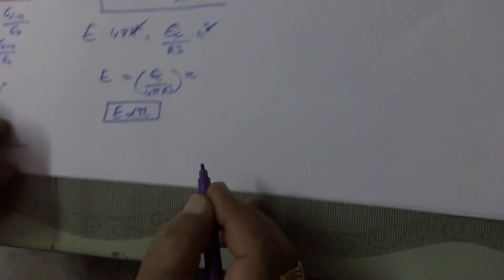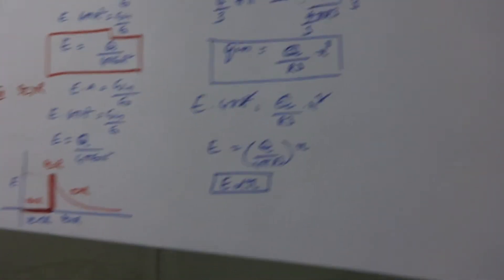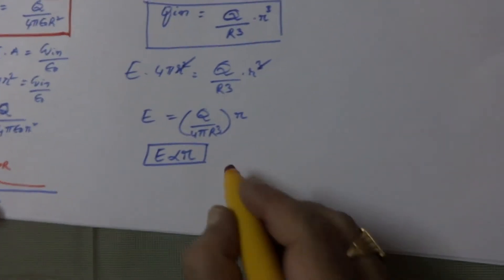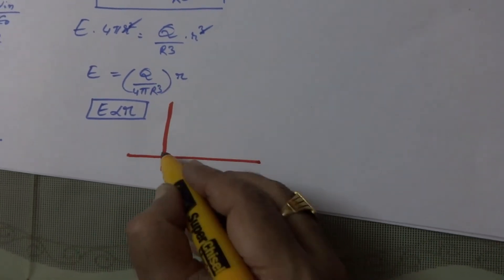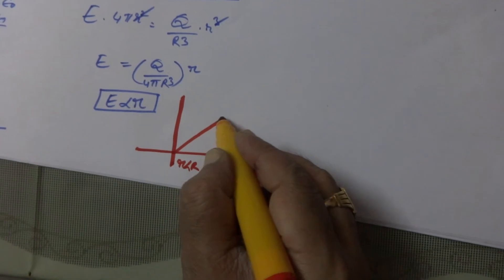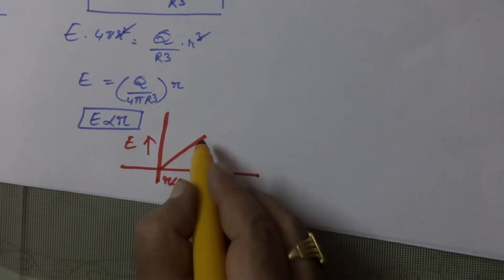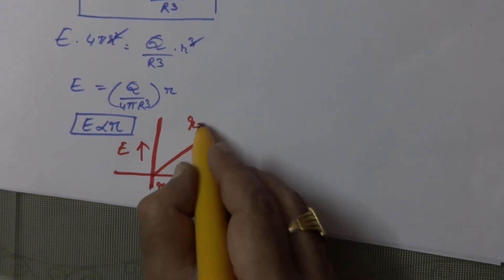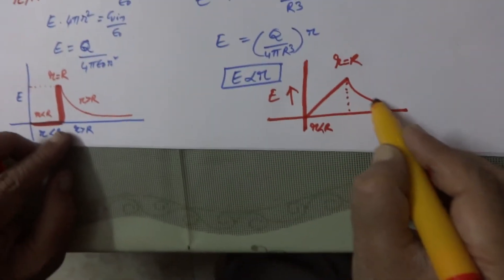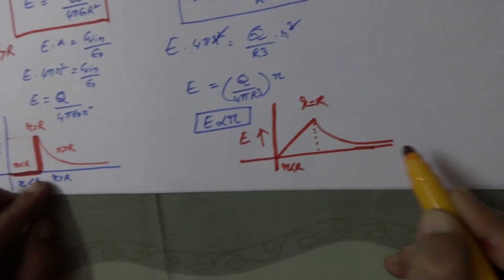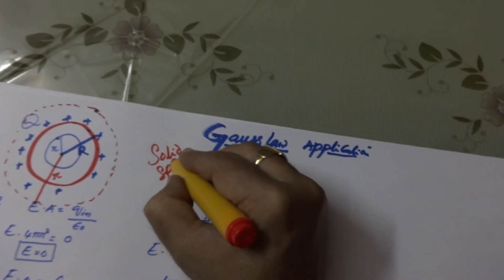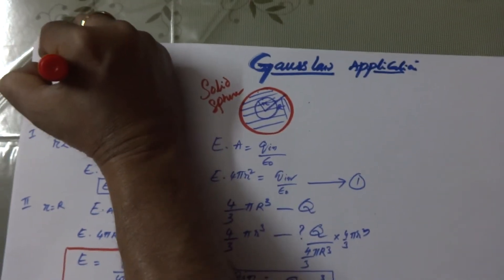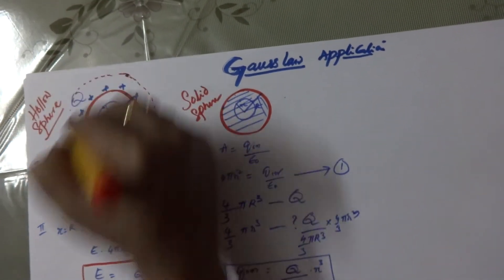So this is the result inside the solid sphere. The other two cases — outside and on the surface — are the same as for the hollow sphere. Now let us plot the graph. When r is less than R for the solid sphere, E is directly proportional to r, so the curve is a straight line increasing up to r equals R. Thereafter outside, it follows the same inverse-square shape as before. This graph is for the solid sphere, and the earlier flat-then-peak graph is for the hollow sphere, also known as spherical shell.